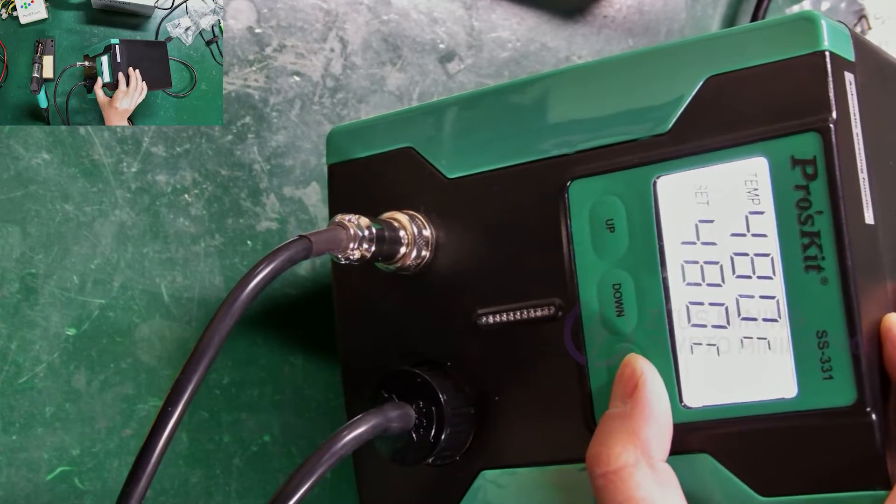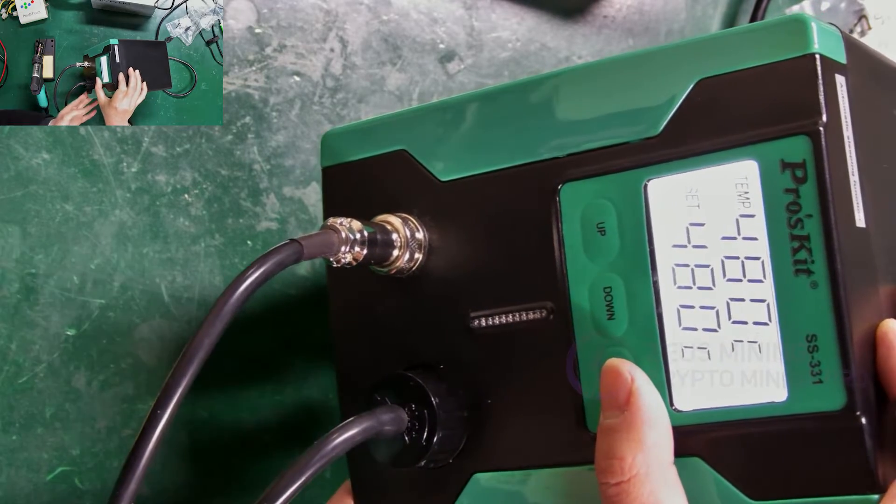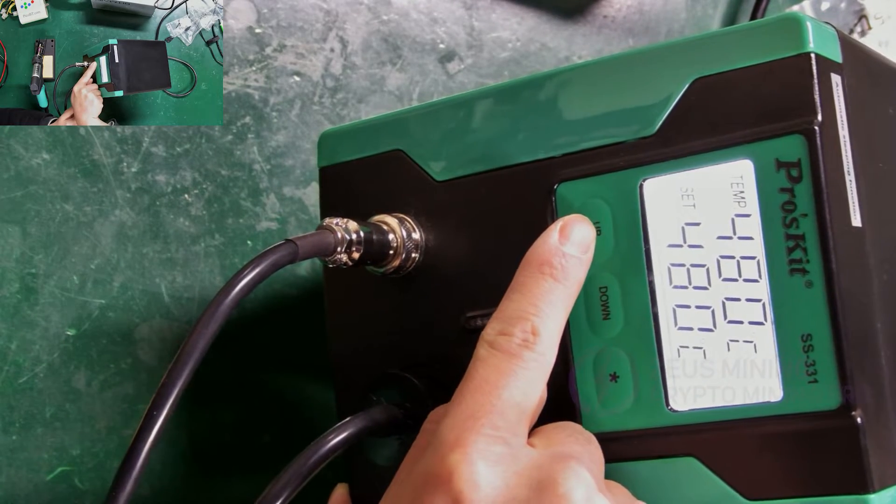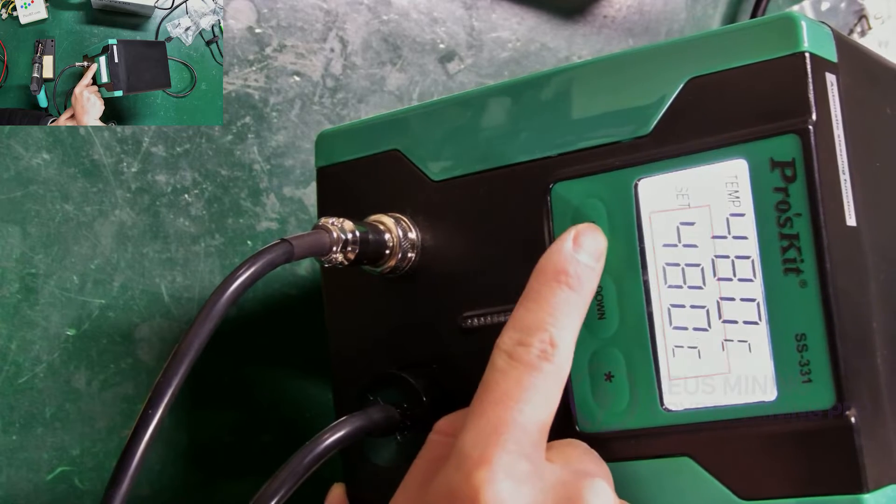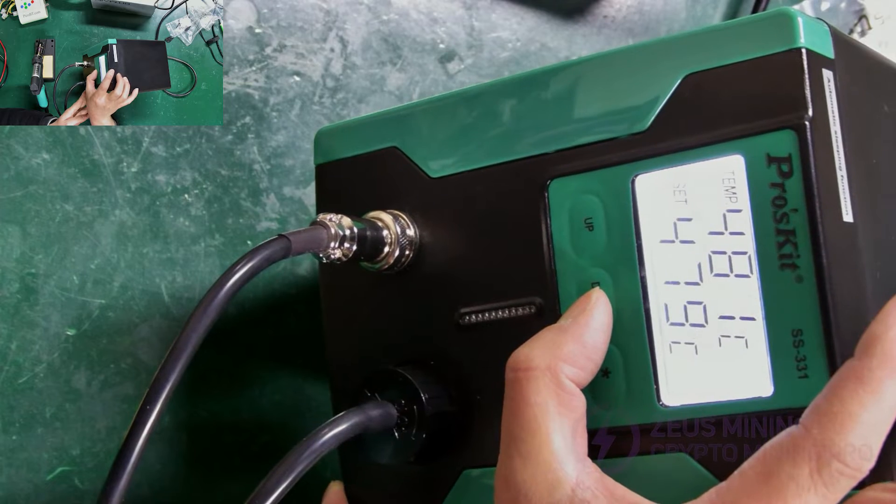Press the switch button to select between celsius and fahrenheit modes. The highest temperature that can be set is 480 degrees celsius. Press the middle button to lower the temperature.